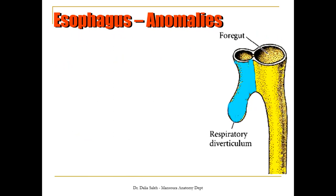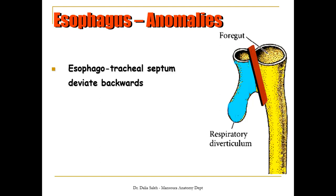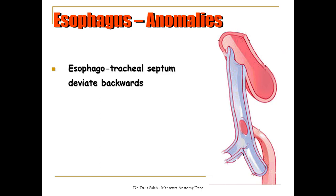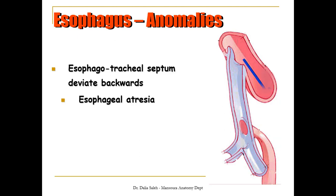Going back to the formation of the tracheoesophageal septum: if there is deviation of this septum backwards, we could end up with esophageal atresia, where the esophagus is made of two parts either separate from each other or connected only by fibrous tissue. The upper part of the esophagus ends blindly as a blind pouch, while the lower part of the esophagus opens by a fistula into the back of the trachea.